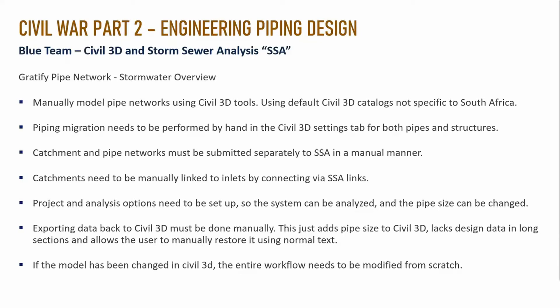Here comes the kicker: if I'm exporting data back to Civil 3D, it must be done manually. This only adds the pipe sizes back to Civil 3D — and only if, with a big 'if,' you set up the piping migration correctly. Because there's a migration when you send it in and a migration when you send it back, 99% of the time it's sometimes much easier to just swap out the parts inside Civil 3D rather than trying to export and import these elements back.